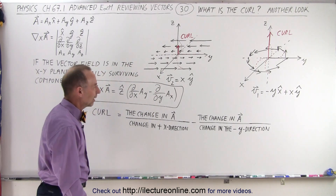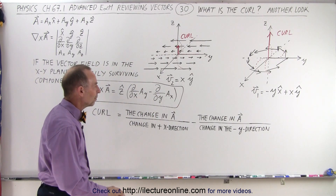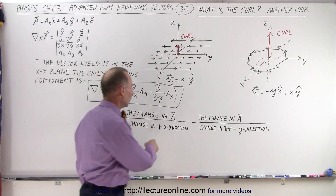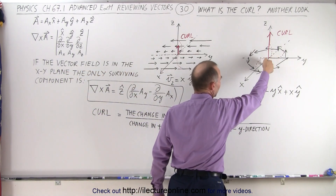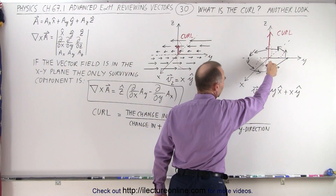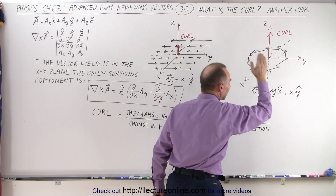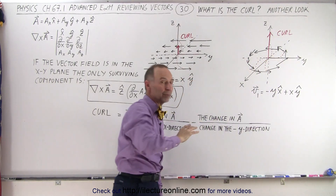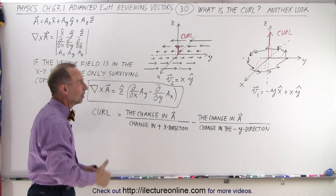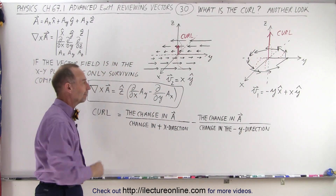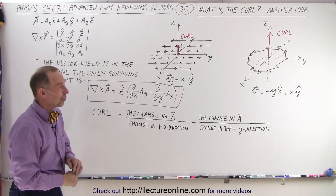The way to look at it is this: if you move in the positive x direction, you have a curling motion one way, and if you move in the negative y direction, you have a curling motion the same way. In both cases, the curling motions are in the same direction, adding together to give the total curl of that vector field when we calculate it.